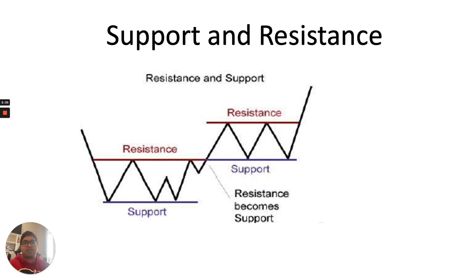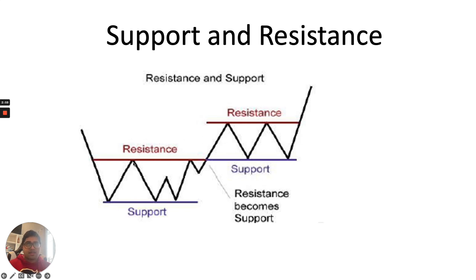Why does that happen? Support are price levels at which new buyers enter stock trading. Whenever new buyers enter, the demand of the stock increases and the stock rises in value. Resistance are levels wherever new sellers enter the stock trading. Whenever new sellers enter, the supply of the stock increases and the stock falls down. That's the concept of support and resistance.